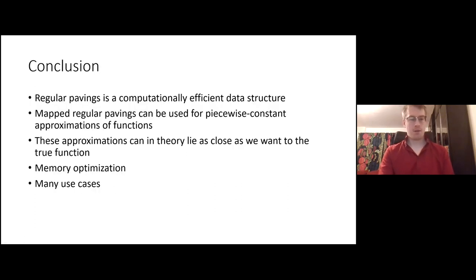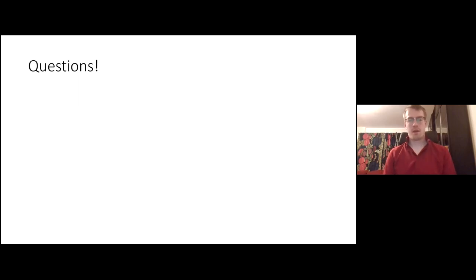In conclusion, mapped regular pavings is a very computationally efficient data structure. They can be used for piecewise constant approximations of functions. These approximations can, in theory, lie as close as we want to the true function. Although, as seen, we need to take into consideration the memory as well and optimize for that. I briefly touched on the many use cases. Primarily, I would say the density estimation from what I've seen. So are there any questions?